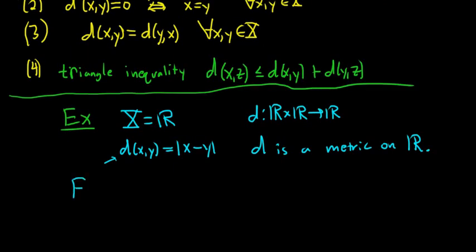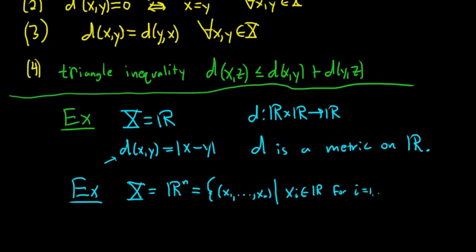Another example: Let X be ℝⁿ, the set of all n-tuples. This is the set of all n-tuples (x₁, ..., xₙ) such that xᵢ is a real number for each i from 1 to n. In the Cartesian plane it would be all the x,y pairs. In a calc 3 class it would be ℝ³ with x,y,z coordinates. Here we have ℝⁿ, n-dimensional space.